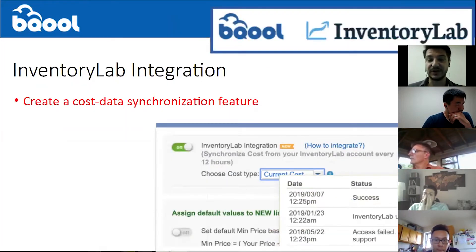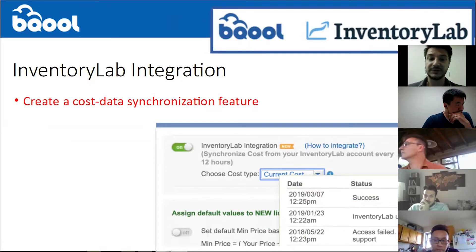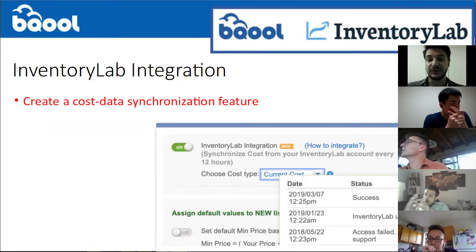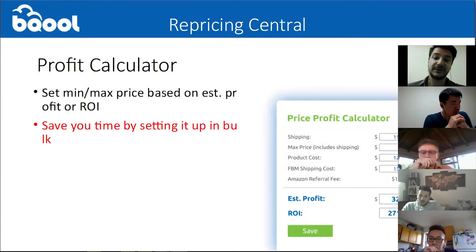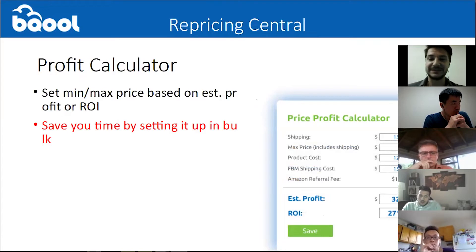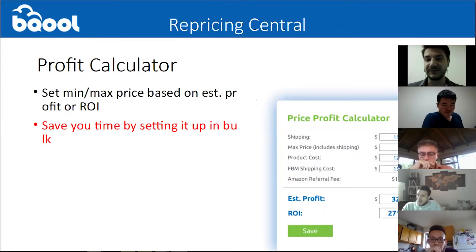We do have an integration with InventoryLab where you can set to download automatically your cost — the product cost — into BeCool. So the cost will be downloaded automatically and you can use this cost to base your calculation of min and max price. We can look into that a bit more later. We do have a profit calculator that is used to calculate your min and max prices, and it will use the cost if you have imported it, even manually if you don't have InventoryLab.